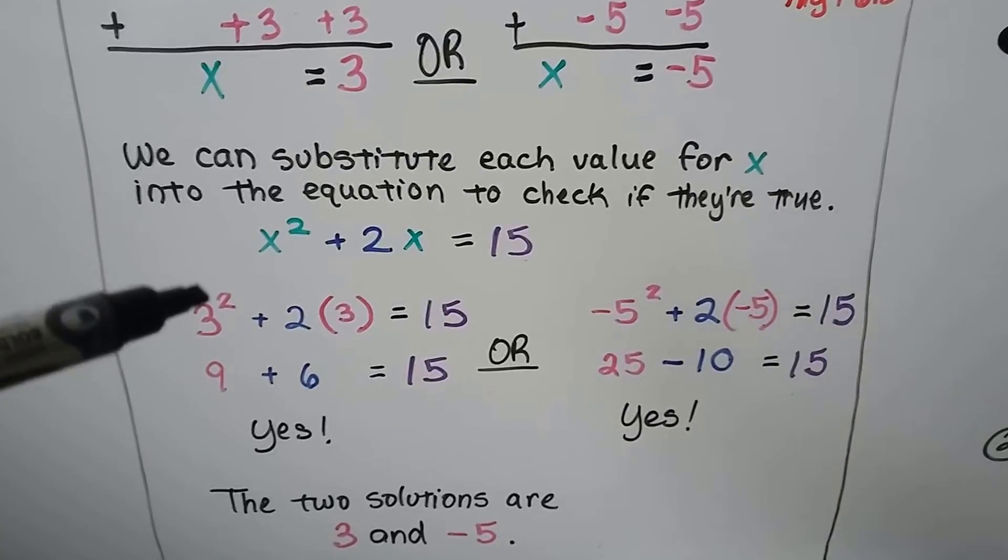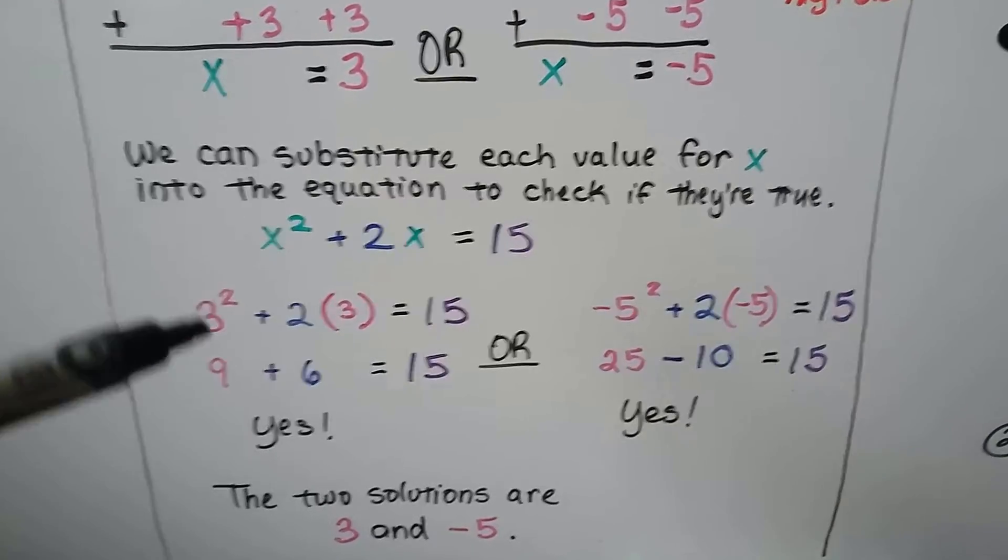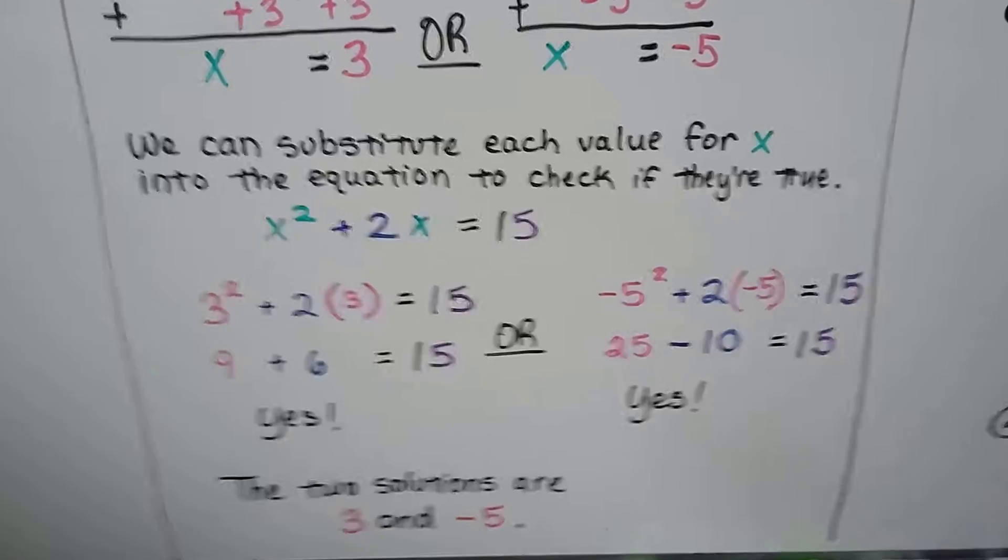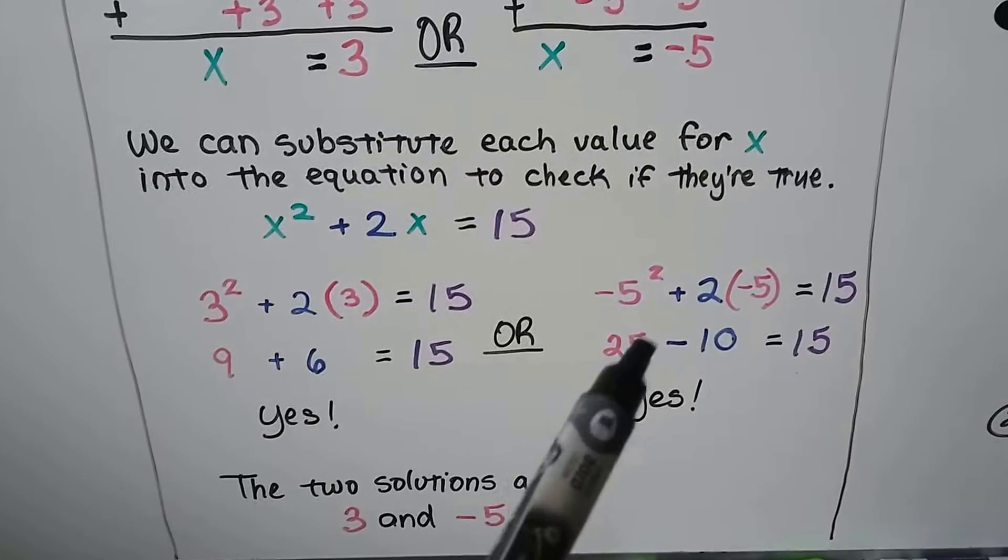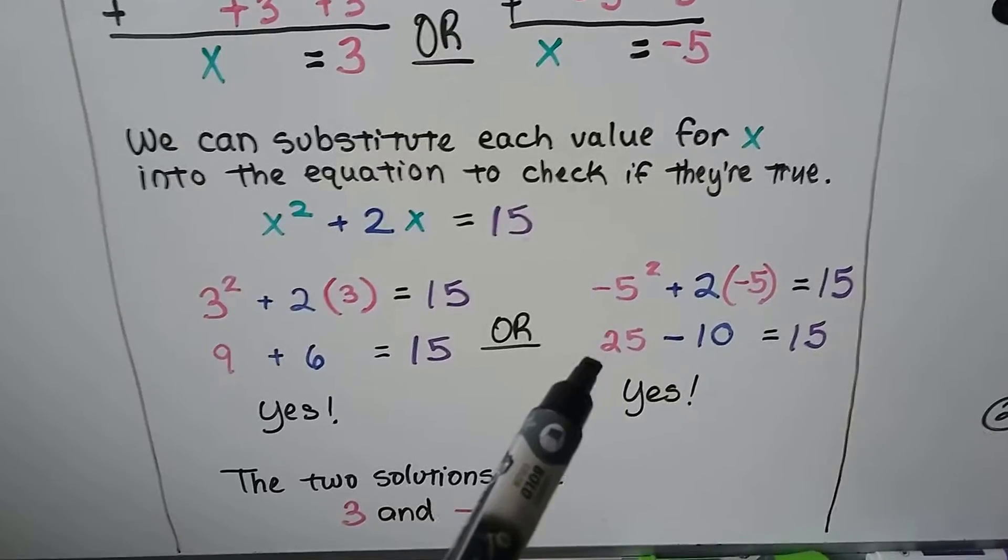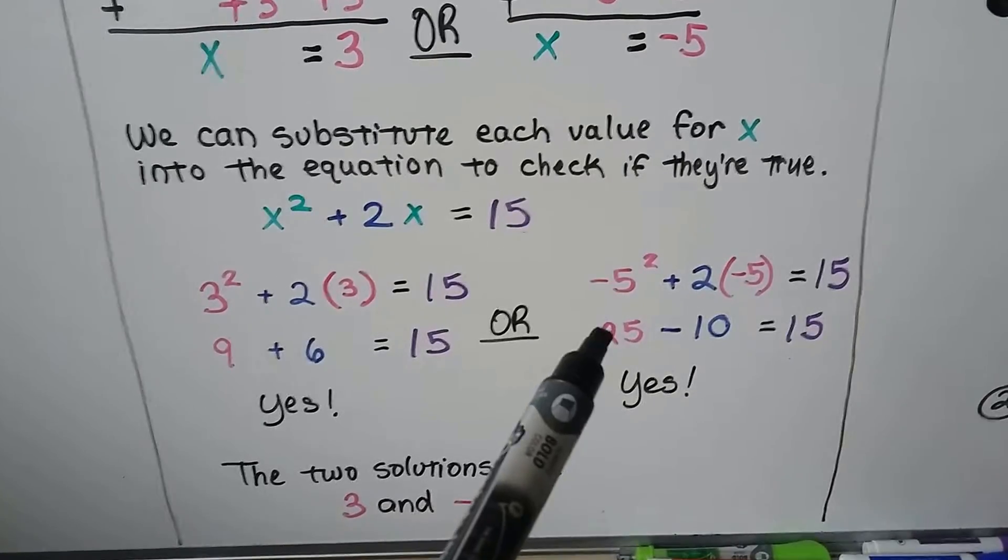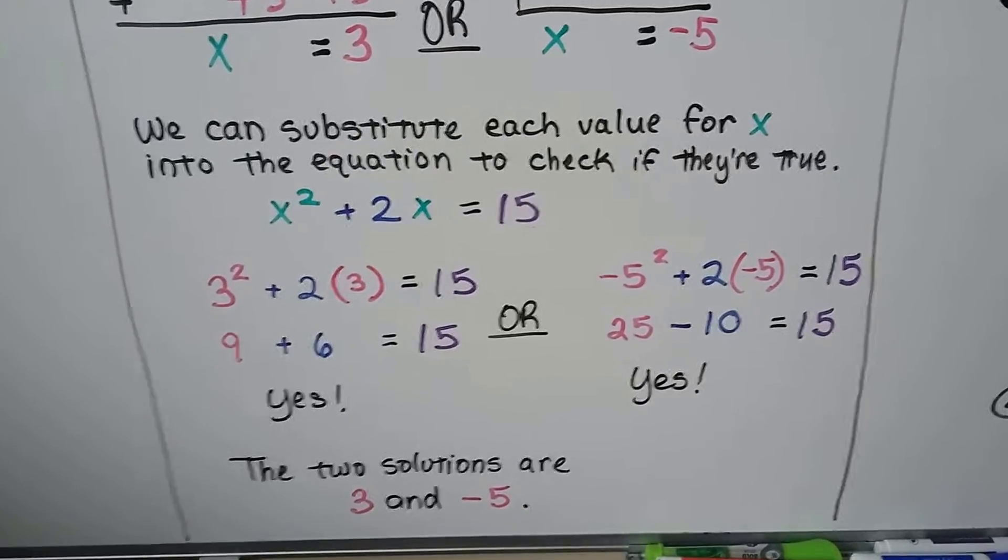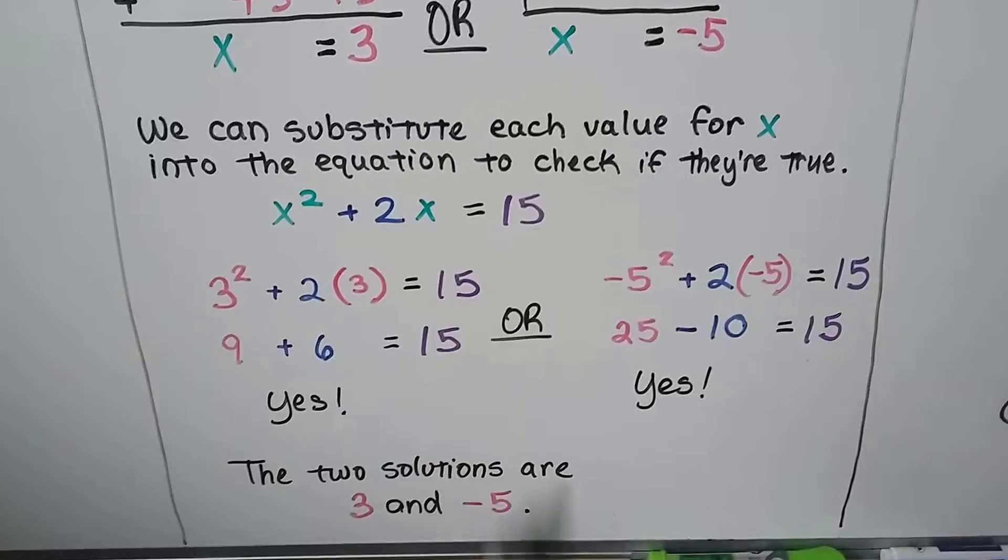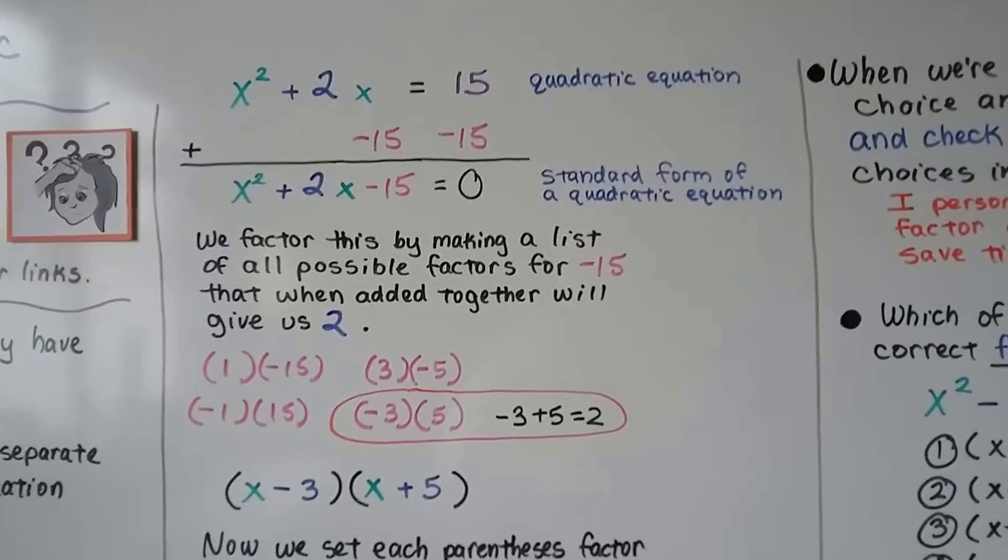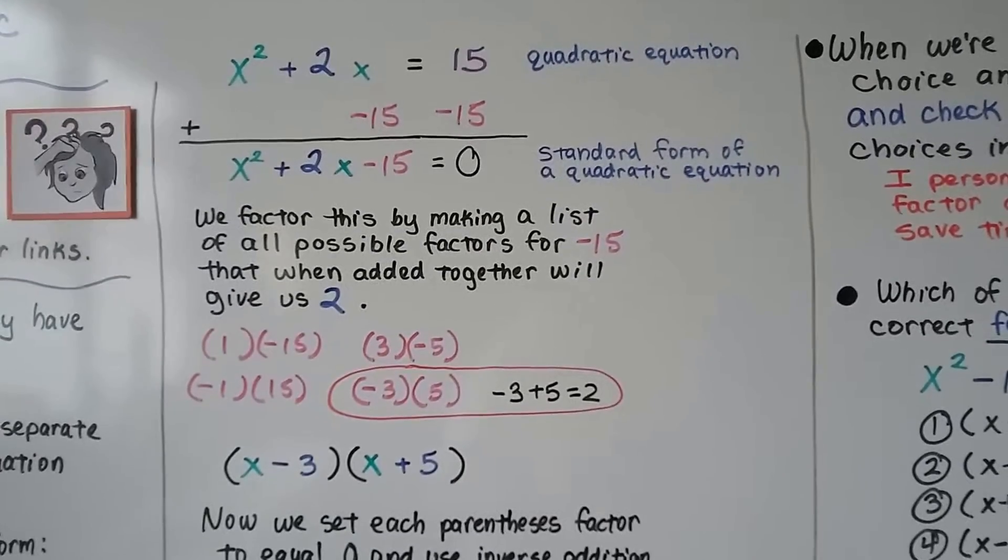So let's plug in 3 for x to see if it works. We get 3 squared which is 9 plus 2 times 3 which is 6 equals 15. Yeah, that's true. How about the negative 5? Negative 5 times negative 5, that's negative 5 squared, is a positive 25 because a negative times a negative makes a positive. And 2 times negative 5 makes a negative 10. Yeah, that equals 15. So these are solutions. 3 and negative 5 are solutions for that quadratic equation. We had more than one solution for x. We had a 3 and a negative 5.